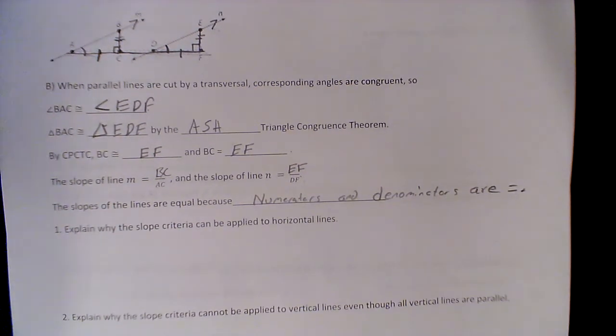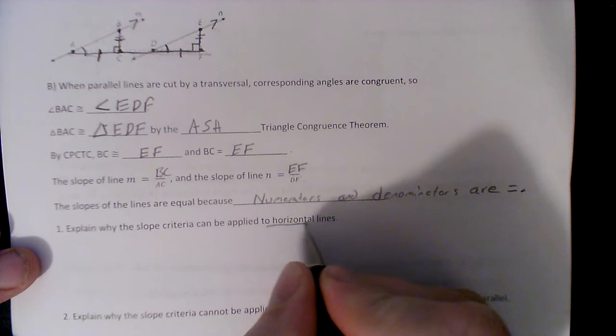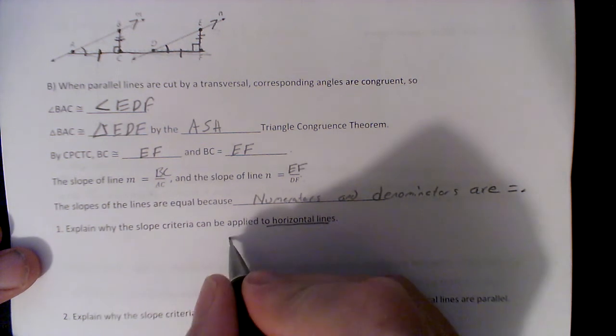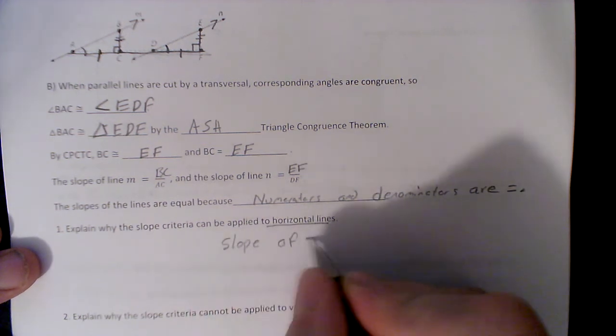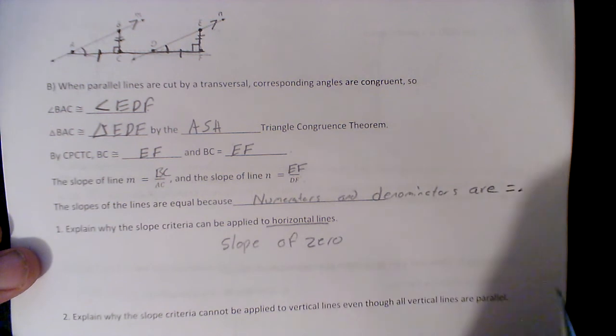Explain why slope criteria can be applied to horizontal lines. Well, horizontal lines have a slope of zero. So they'd all have a slope of zero.